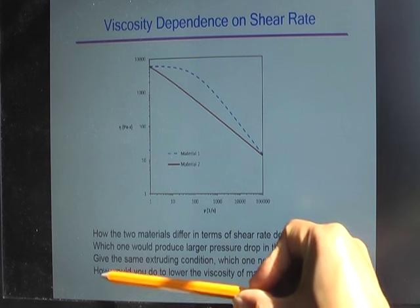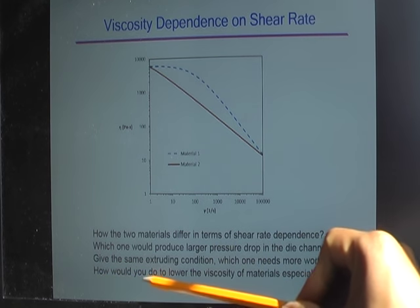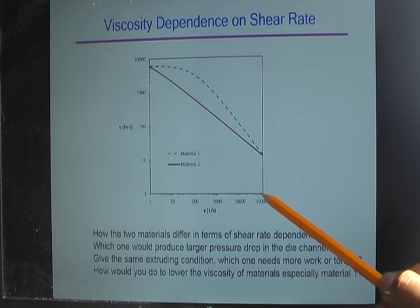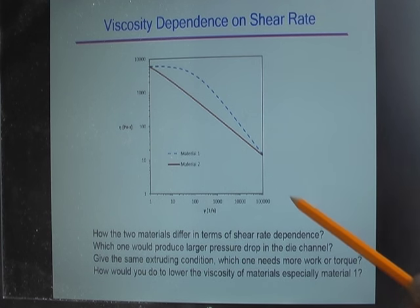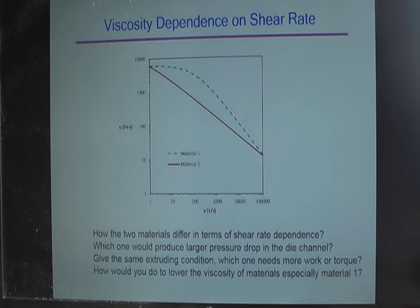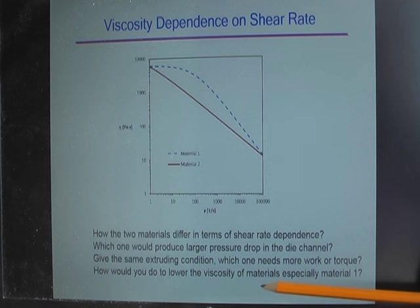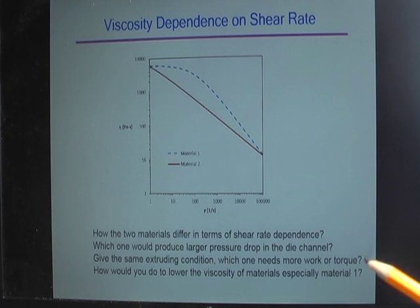To lower the viscosity of Material 1, you can increase the shear rate — which you can do by increasing the screw RPM or screw diameter. You can also raise the processing temperature, because as we learned earlier, increasing temperature decreases the viscosity of plastics.